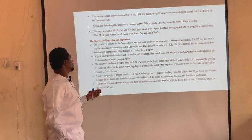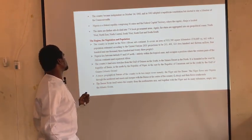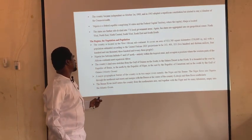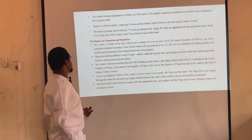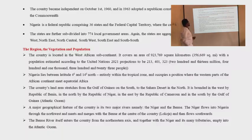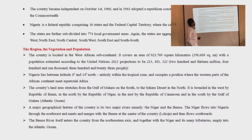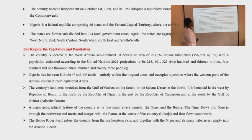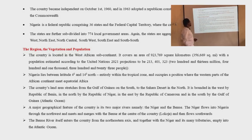Having seen some facts about Nigeria, we are now going to look at the region, the vegetation, and the population of Nigeria. The country is located in the West African subcontinent. It covers an area of 923,769 square kilometers, with a population estimated according to the United Nations 2021 projection to be 213,401,323.